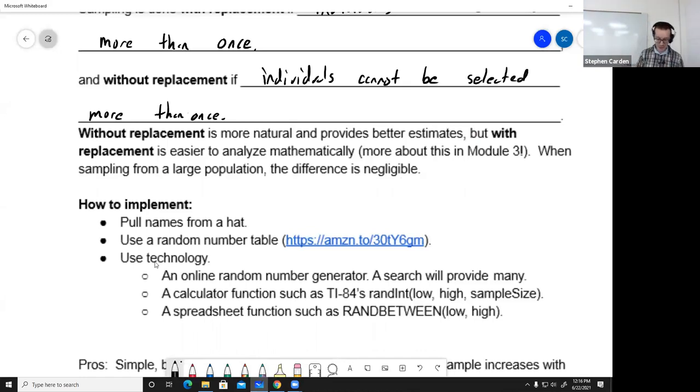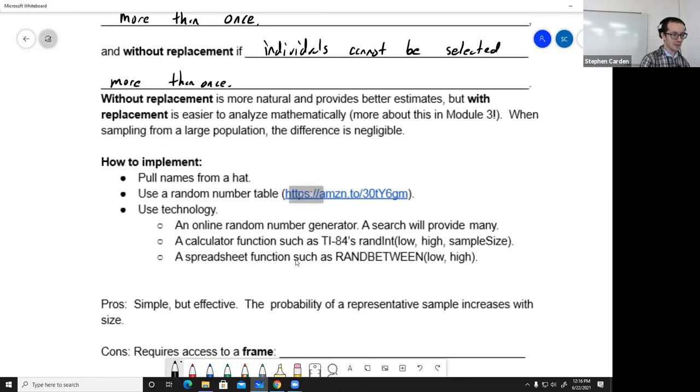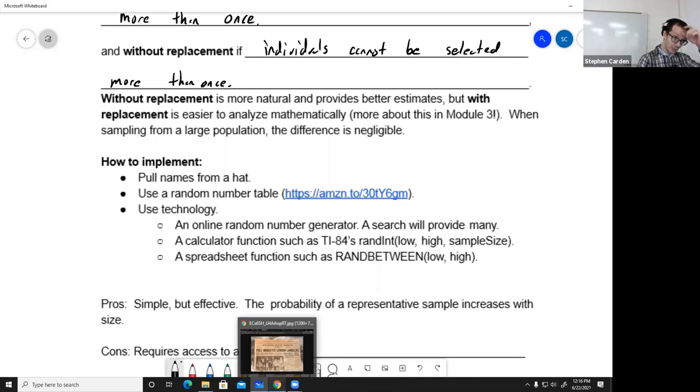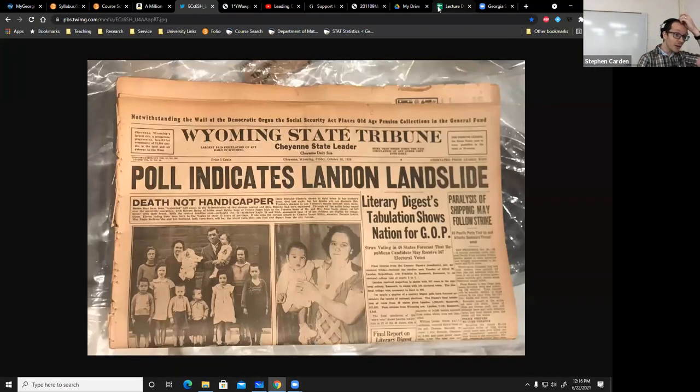Nowadays everybody's got access to a powerful computer in their pocket, so you use technology. If you just search random number generator, you can find those online. I'm going to show you one that's in the spreadsheet. This will allow us a gentle introduction into the spreadsheet.